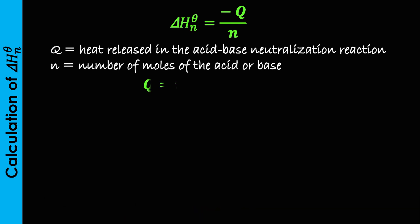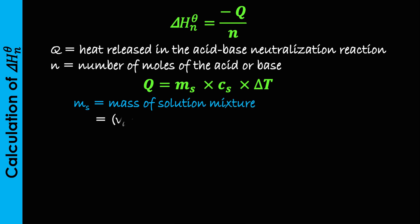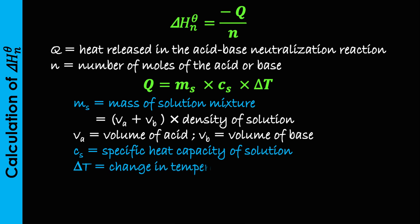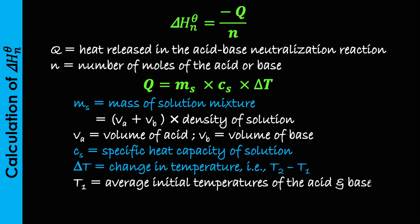To evaluate Q, we use Q equals ms times Cs times delta T, where ms is the mass of the solution mixture obtained by adding the volume of the acid and the base to get the volume of the solution, then multiplying by the density of the solution in grams per cm³. Cs is the specific heat capacity of the solution, and delta T is the change in temperature calculated as T2 minus T1. T1 is always the average of the initial temperatures of the acid and the base solutions, while T2 is the final temperature of the mixture.